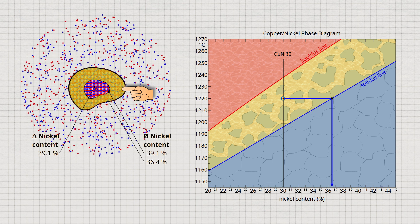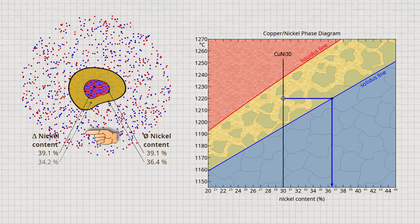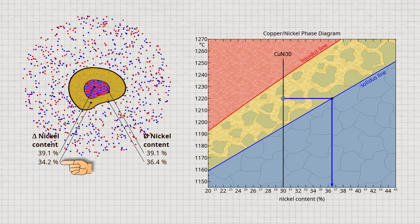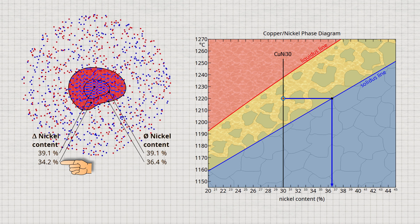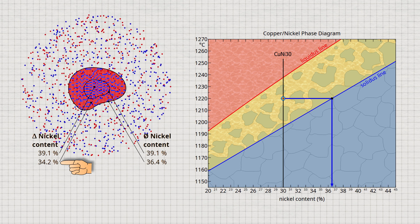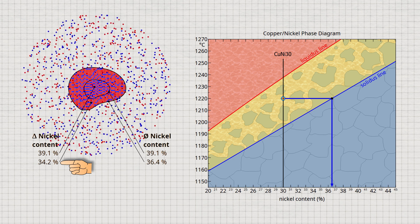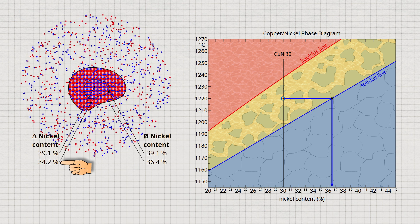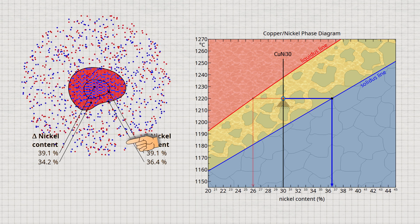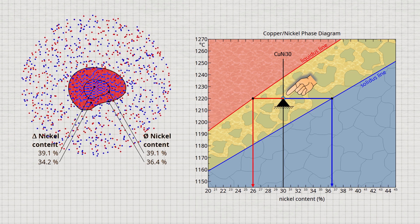In fact, the newly solidified layer has a nickel content of only 34.2%. Of course, this is again only an average value. This value cannot be determined directly from the phase diagram. However, it can be determined indirectly using the lever rule to calculate the phase fractions.